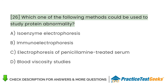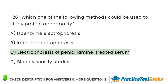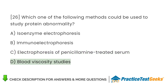Which one of the following methods could be used to study protein abnormality? A. Isoenzyme electrophoresis. B. Immunoelectrophoresis. C. Electrophoresis of penicillamine-treated serum. D. Blood viscosity studies.